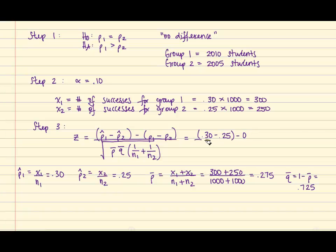And recall that P1 minus P2 is 0 because we're assuming that there is no difference between the two groups. Once you perform the math on that, you obtain a z-test statistic equaling 2.50.